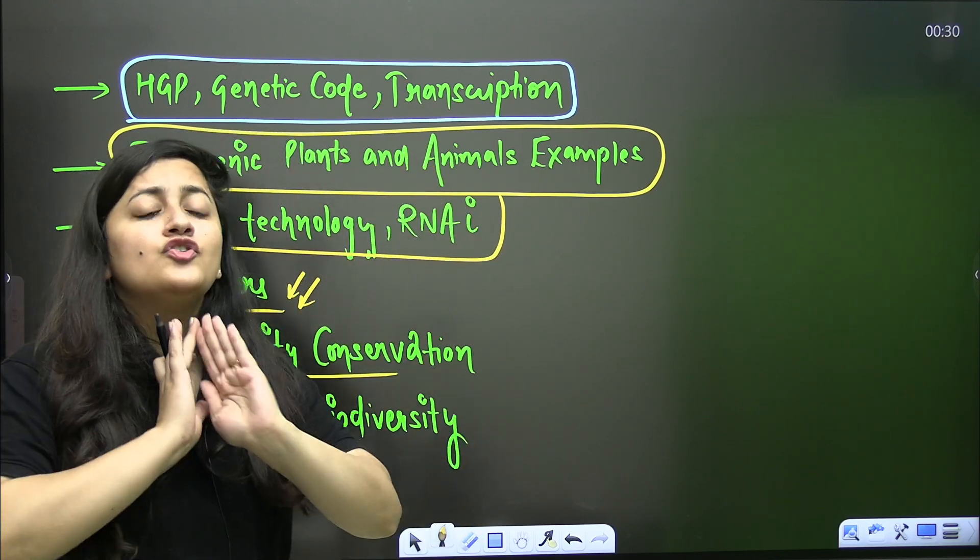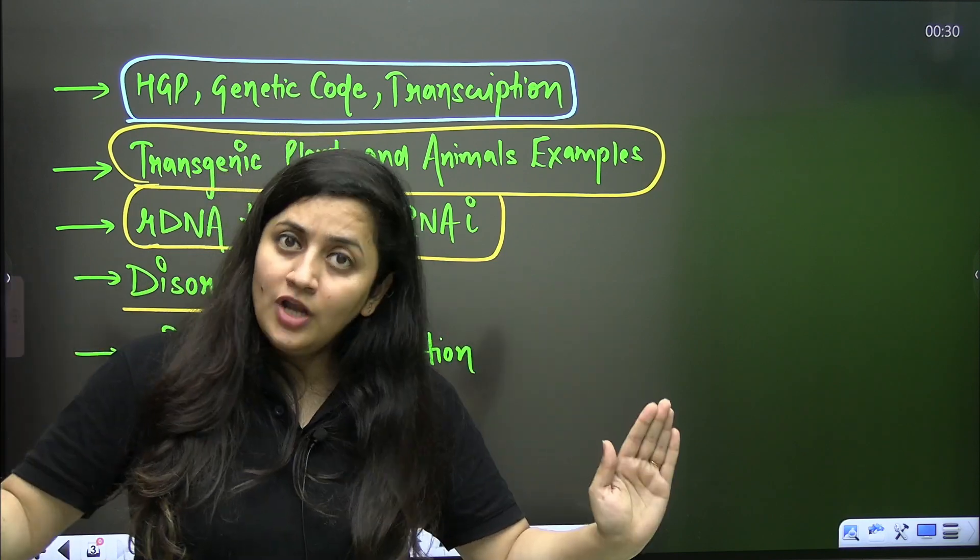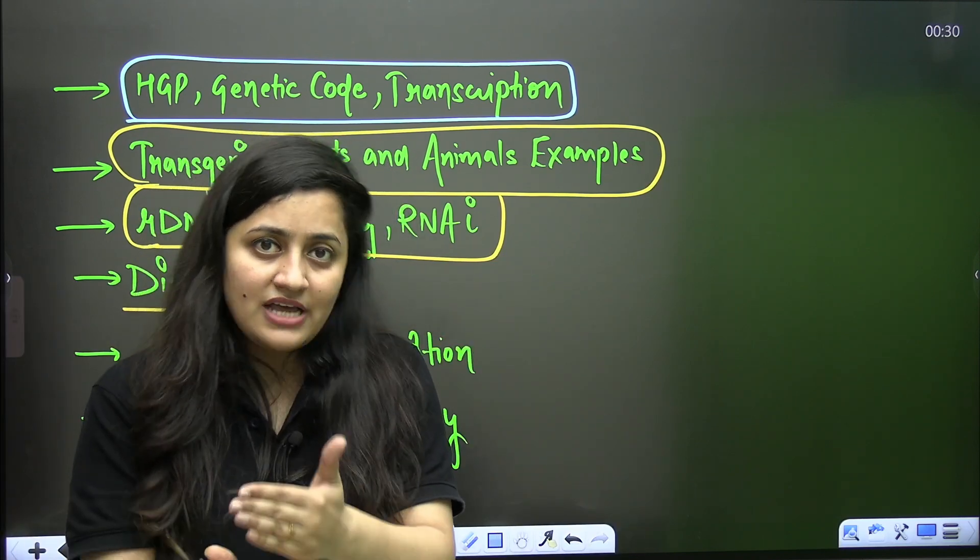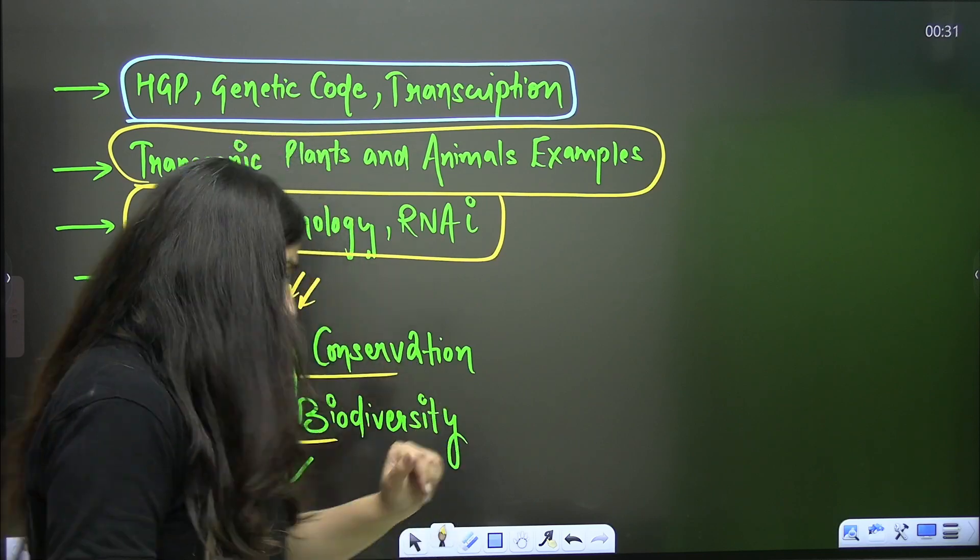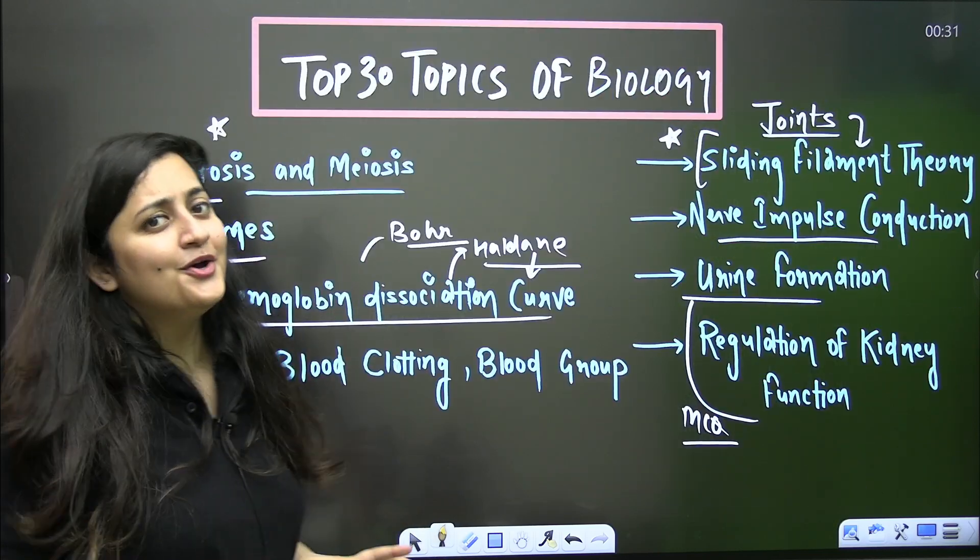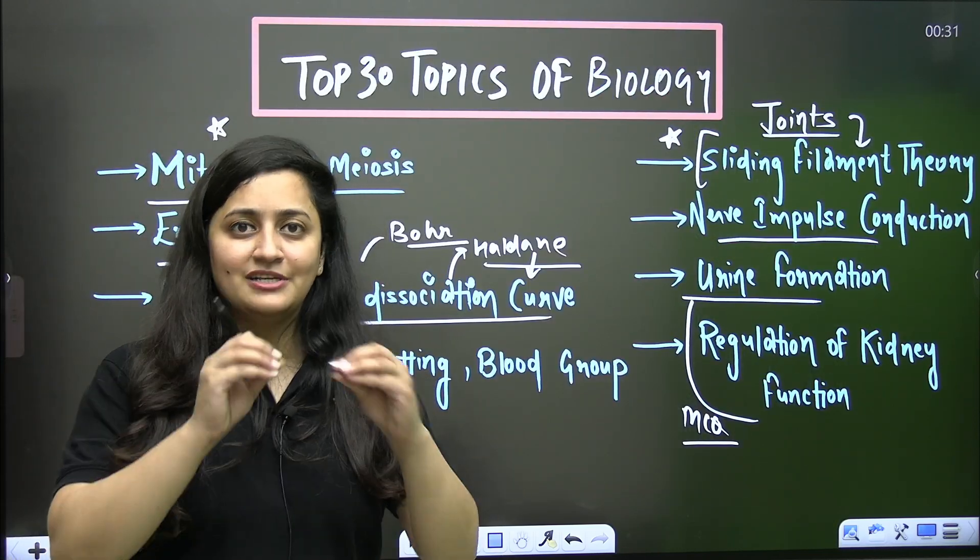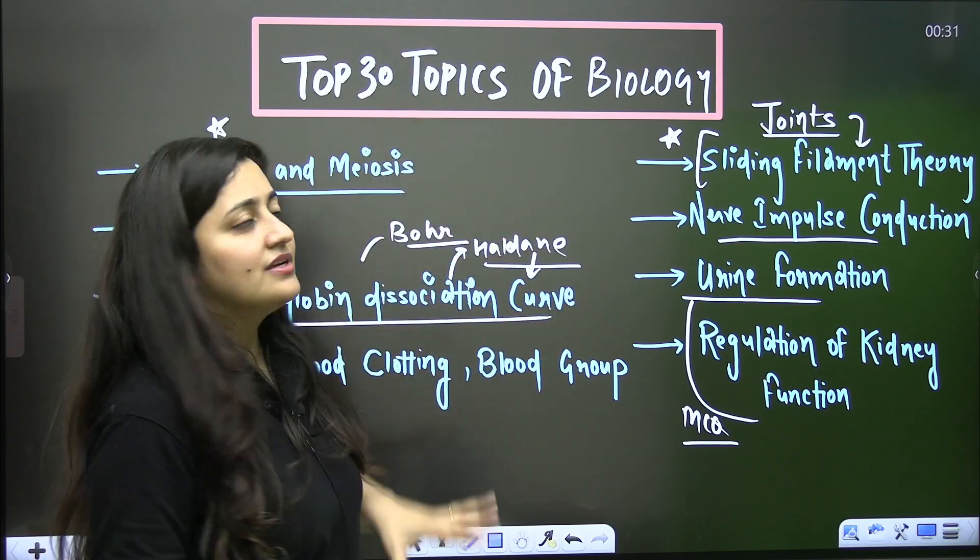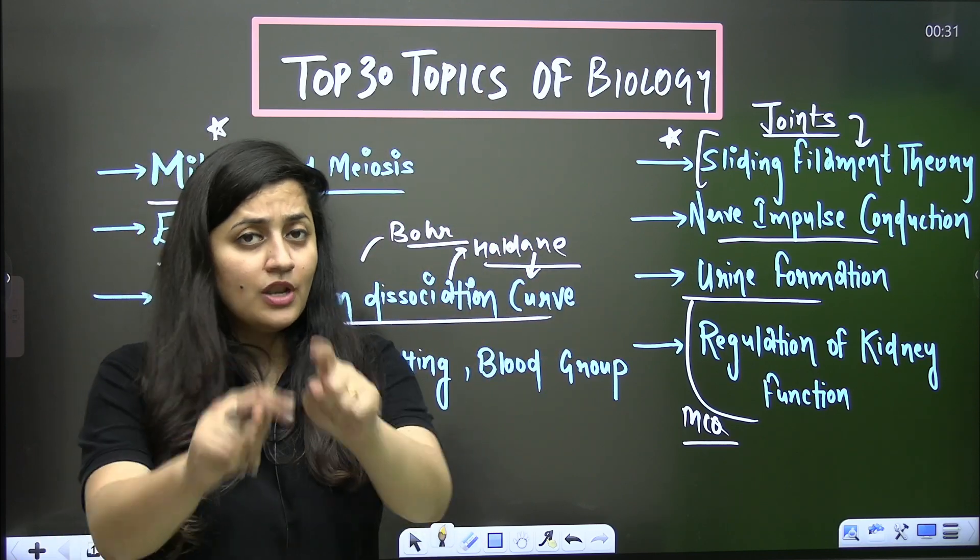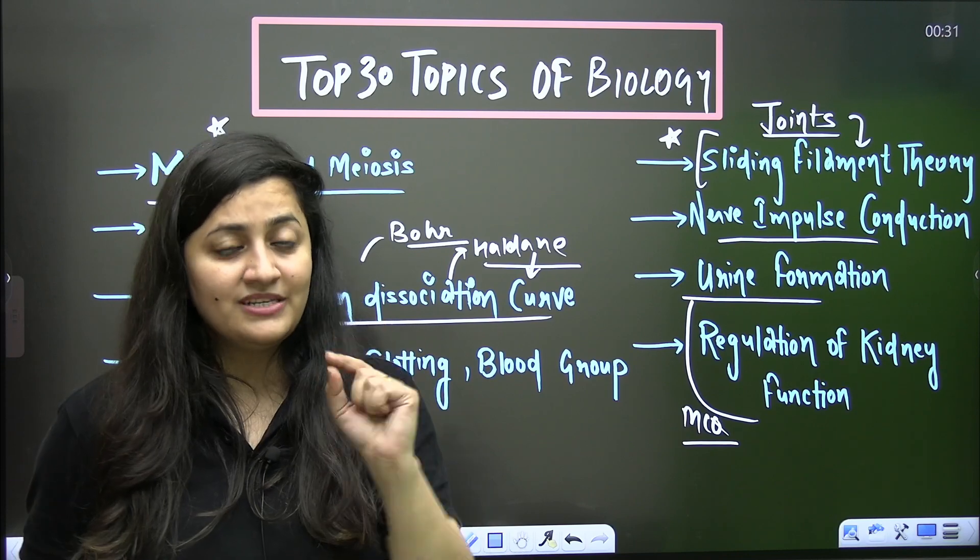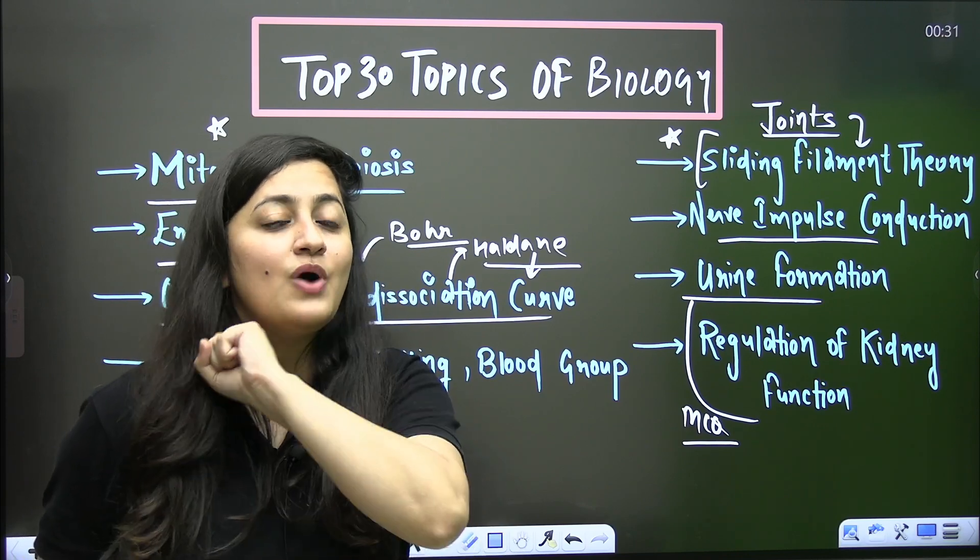So this is the list of those topics which you should not avoid at all. And I will come up with another videos, I will even provide you the top 100 topics as well. But I know you have just started your preparation after the clarity on your syllabus. That's why I'm starting with the top 30 topics of biology. So now what do you have to do? Once you're done with these 30 topics, just put that in the comment section.